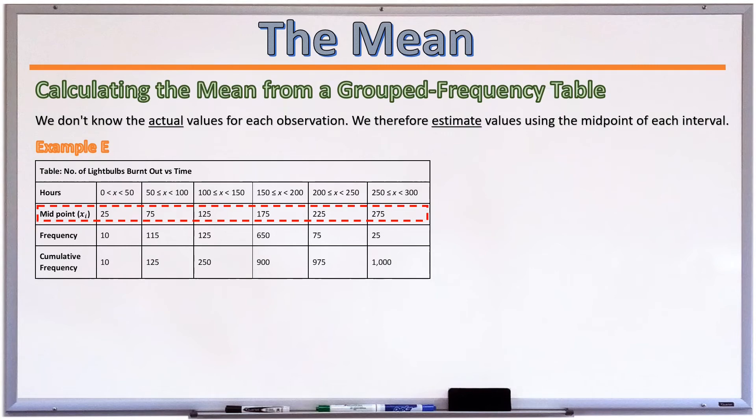So for our first interval between 0 and 50, the midpoint would just be 25, and we would calculate that by saying 0 plus 50 divided by 2. For the next interval, it would be 75, and that would just be 50 plus 100 divided by 2. And so on and so on and so on until the last column, which is just a midpoint of 275, and that would be found by saying 250 plus 300 divided by 2.